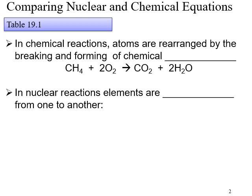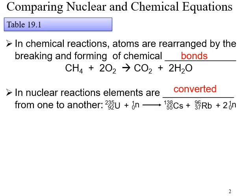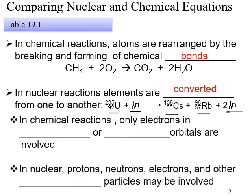Let's compare nuclear and chemical equations. In chemical reactions, atoms are normally rearranged by the breaking and forming of chemical bonds, like the burning of methane. In nuclear reactions, elements are converted from one to another — for example, uranium being hit with a neutron, then fissioning to become cesium and rubidium atoms plus two neutrons.